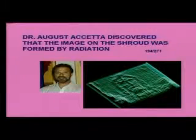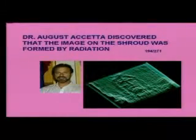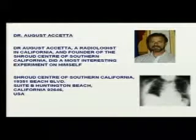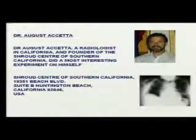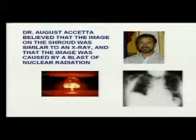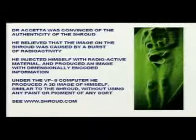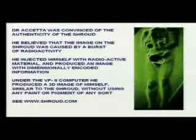Dr. August Assetta has actually discovered how the image of the Shroud of Turin was formed — it was formed by radiation. Dr. Assetta is a radiologist in California and founder of the Shroud Center of Southern California. He believed the image was similar to an X-ray caused by a blast of nuclear radiation. He injected himself with radioactive material and produced an image with dimensionally encoded information, then placed himself under the VP8 image analysing computer and produced a three-dimensional image of himself — similar to, but not as good as, the Shroud — without using any paint or pigment of any sort. You can read about his discovery on Shroud.com.